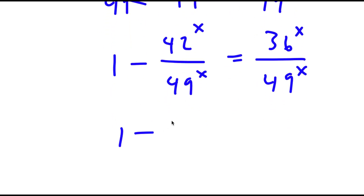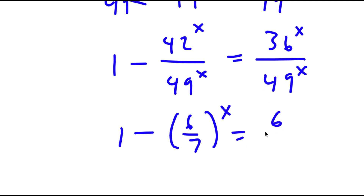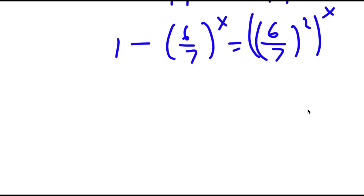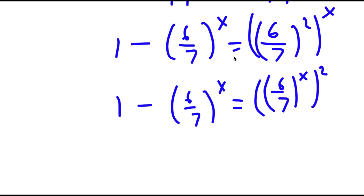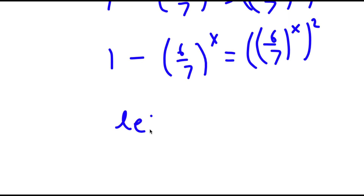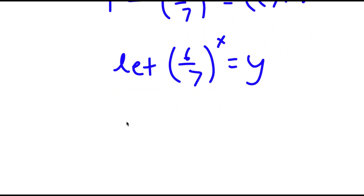Now 42 over 49 is the same thing as 6 over 7. And 36 over 49 is the same thing as 6 over 7 squared to the power of x. I can switch the places of 2 and x, so this is the same thing as 6 over 7 to the power of x squared. Now I'm going to let 6 over 7 to the power of x equal the variable y.